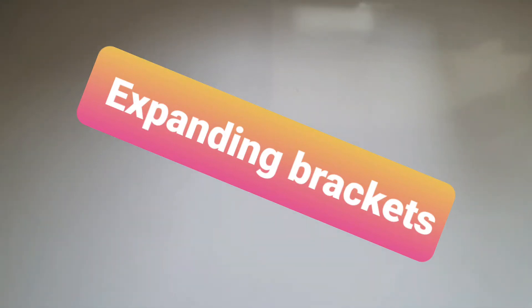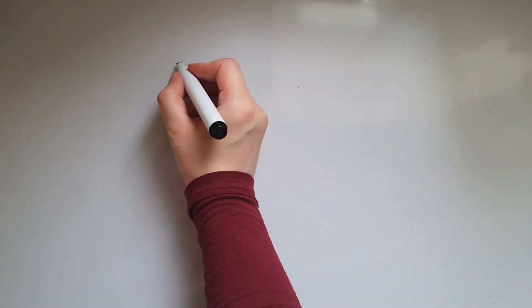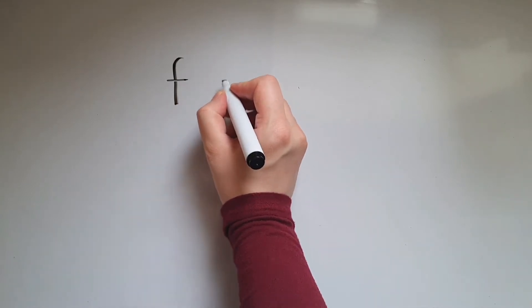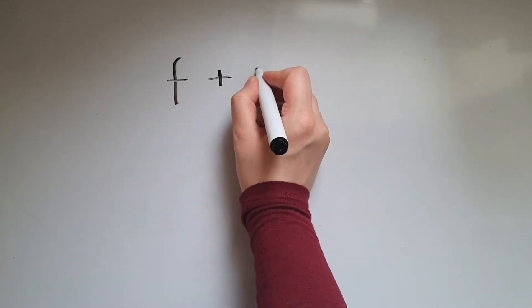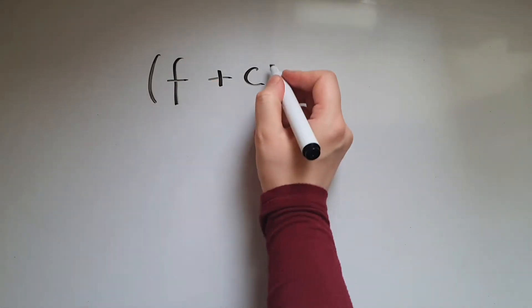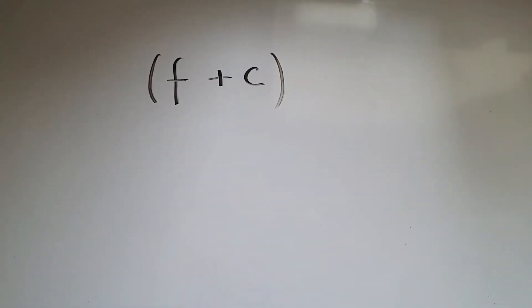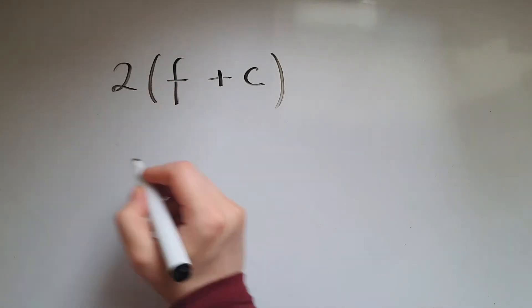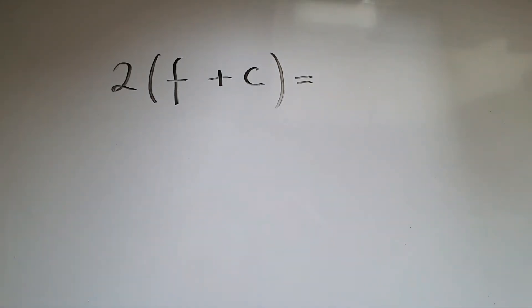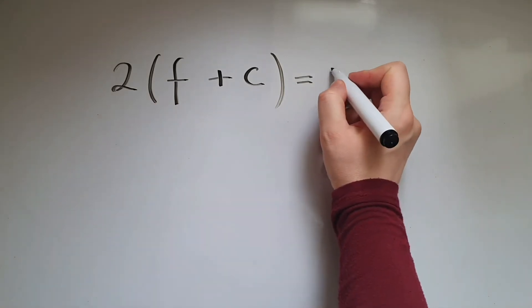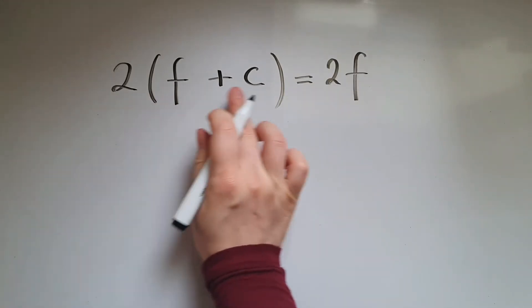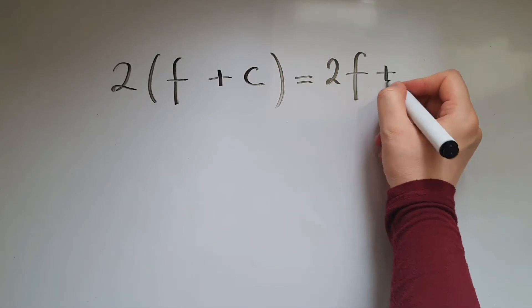In this video, learn to multiply a single term over a bracket. We'll give you context. If I call a takeaway shop and order fish and chips, there will be one portion of fish and one portion of chips. If I order two, when I receive them I'll have two portions of fish and two portions of chips.